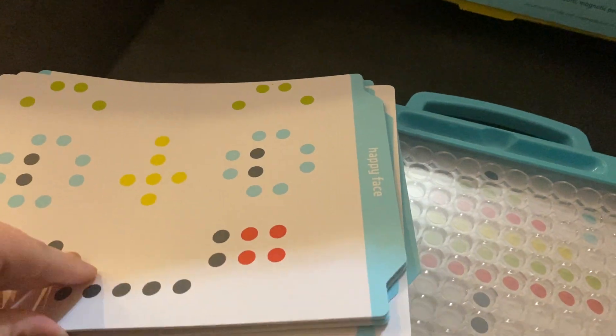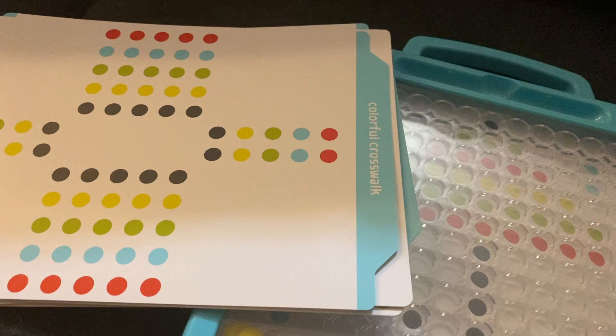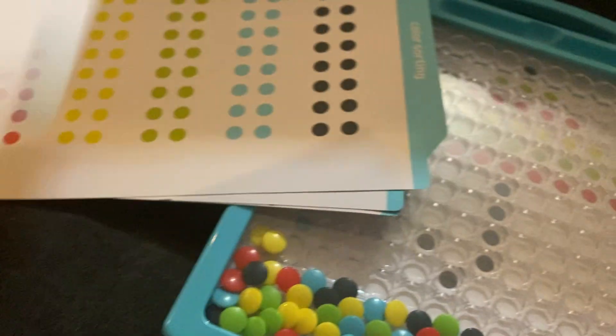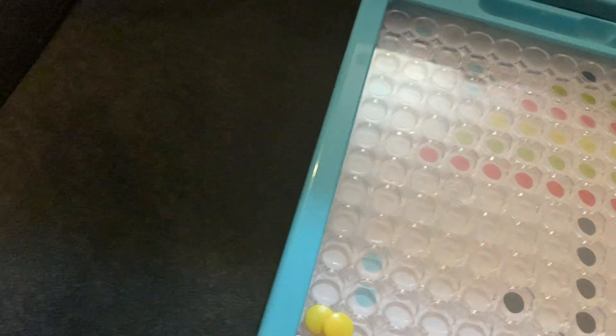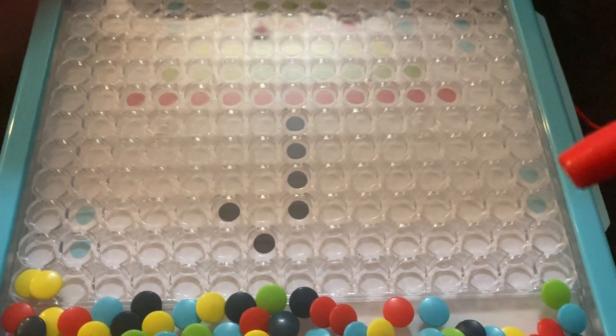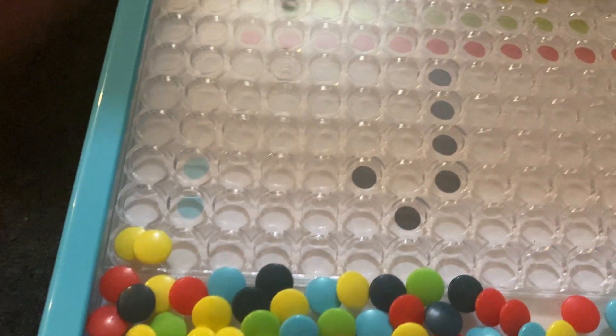It comes with 50 different cards and activities that you can put in, even has alphabet patterns, just pictures of everything, has some numbers, flowers. And it comes with magnetic patterns already attached, and what you do is you can use the cards.